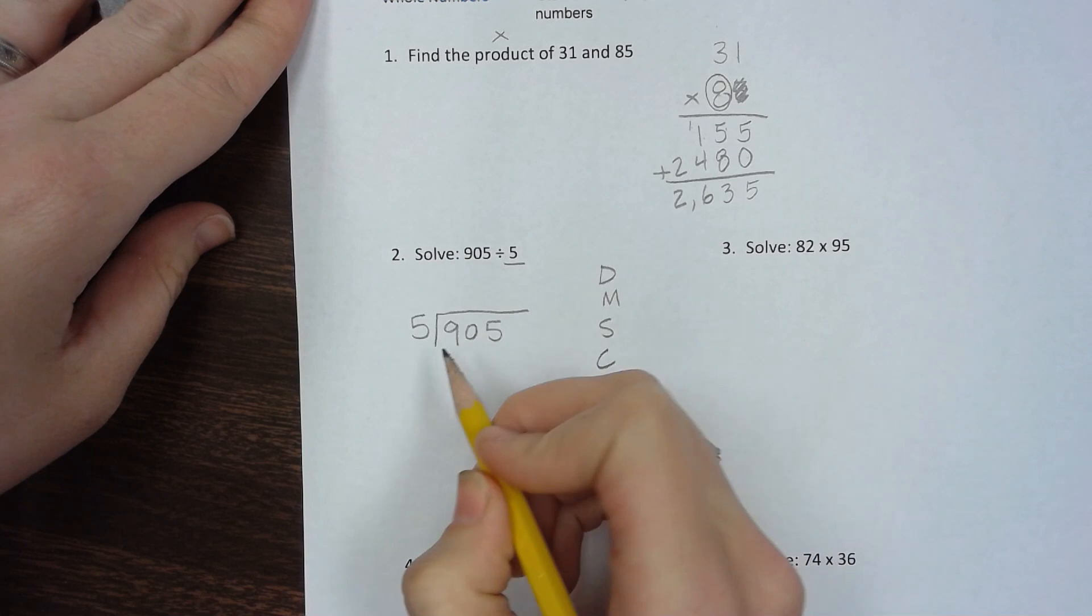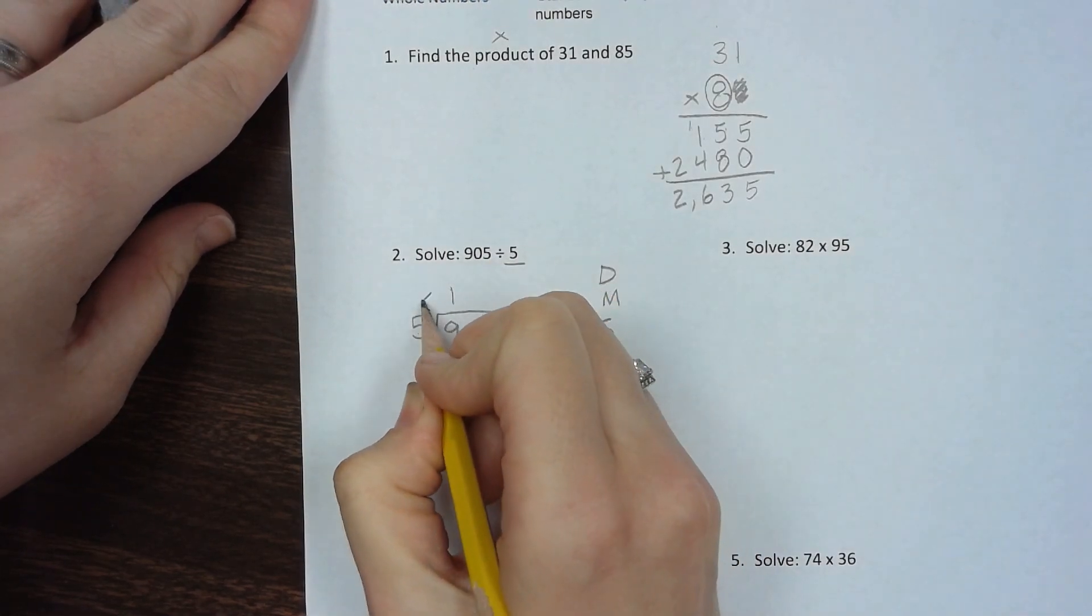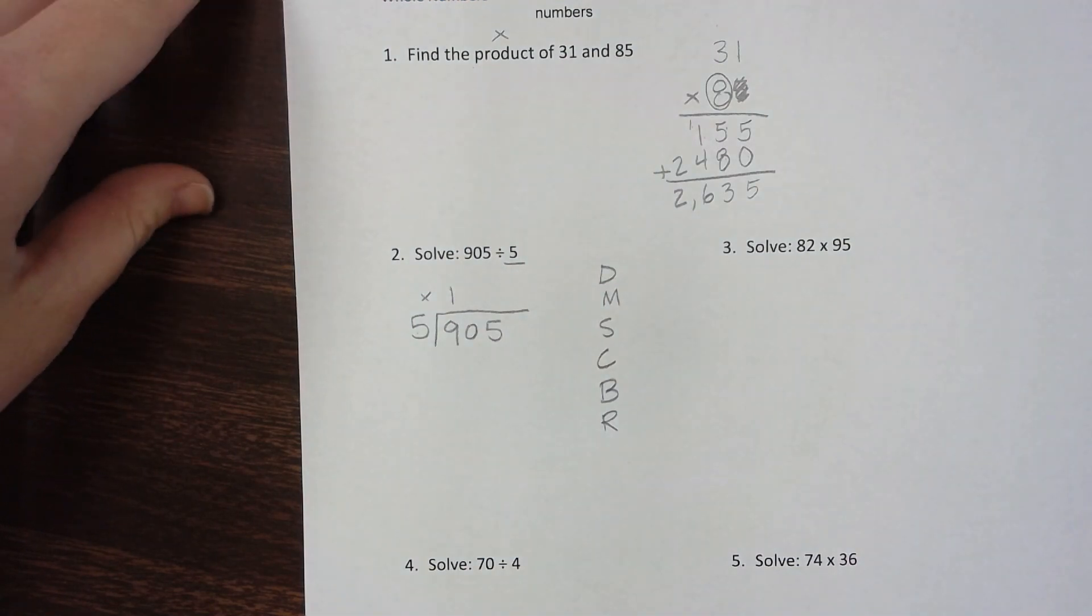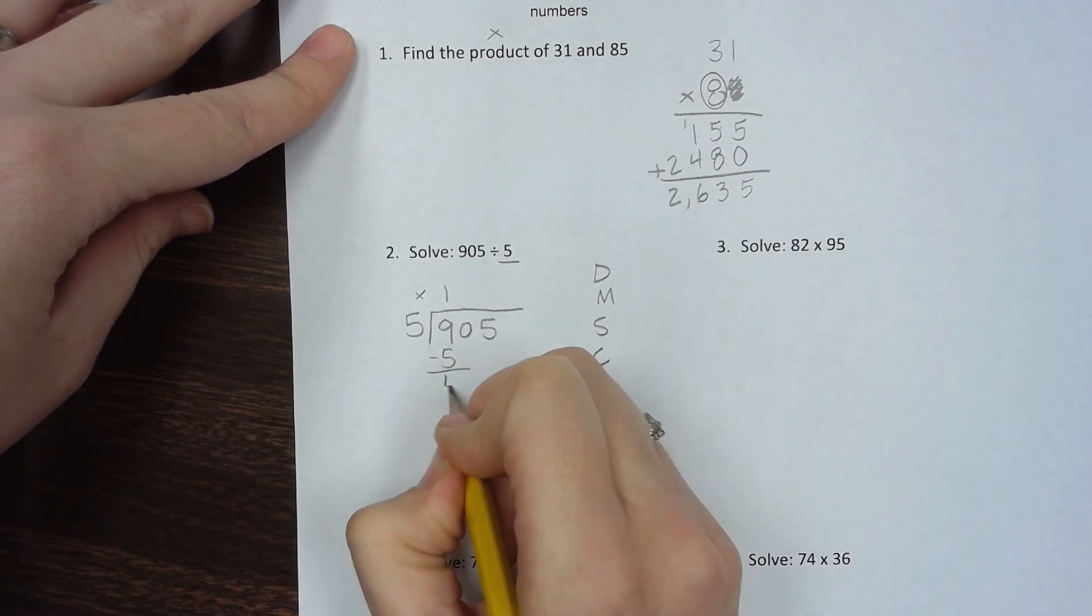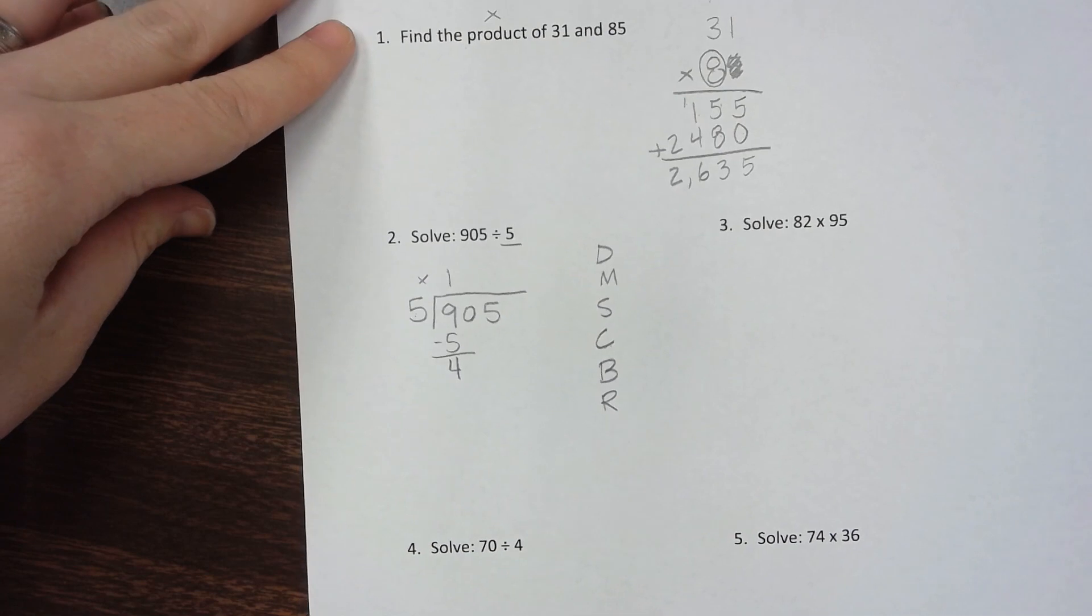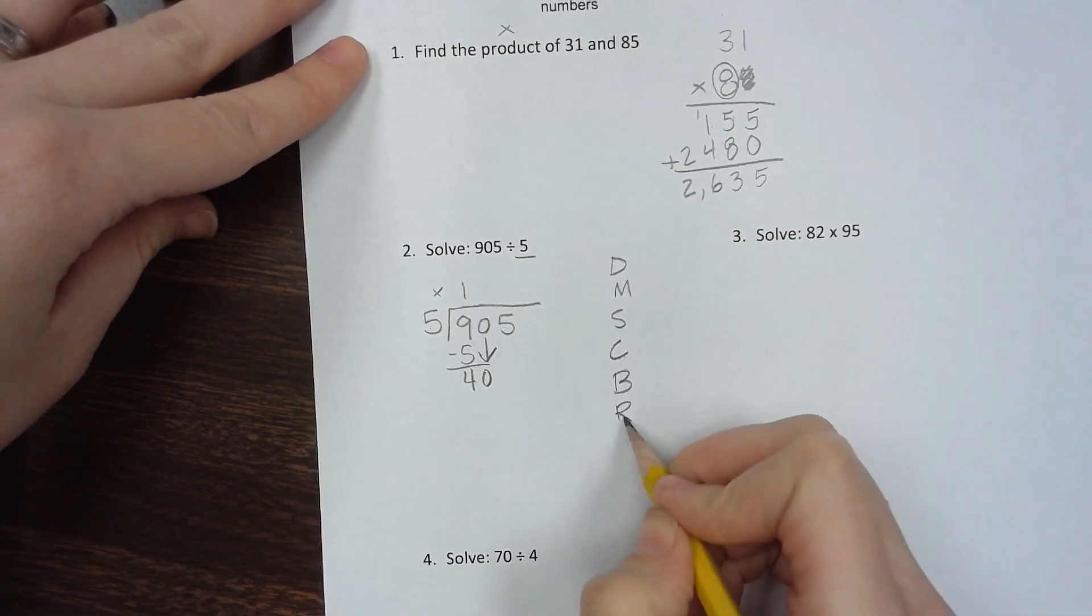Let's start: 5 goes into 9 one time. Multiply: 1 times 5 is 5. Subtract and get 4. Check that 4 is smaller than 5, which it is. Bring down the next number, which is 0.